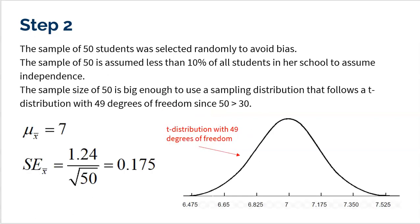Step two is building the sampling distribution. It shows what any possible sample of 50 is going to look like. If her school has 2,000 kids, there are millions of possible different samples of size 50. I'm going to assume the null to be true and put seven as the mean of all possible samples — some samples will be higher, some lower, but the mean of all samples should be seven if that's the truth. Then I'll use standard error rather than standard deviation, which is why this is a t-distribution.